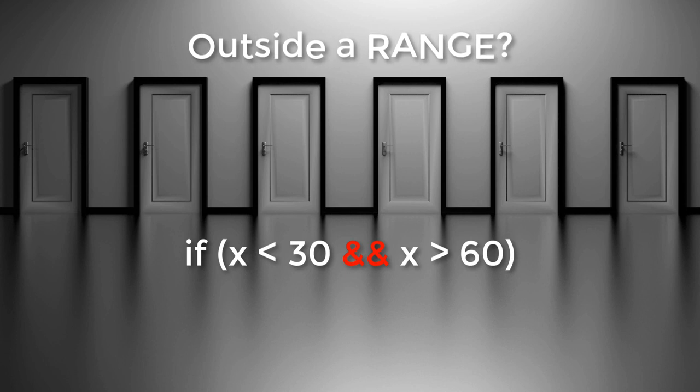So do you think this is possible for a value to be both less than 30 and greater than 60 at the very same time? Remember both sides of the AND must be true for the whole expression to be true.